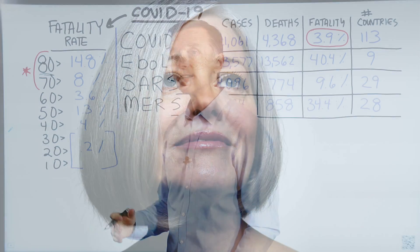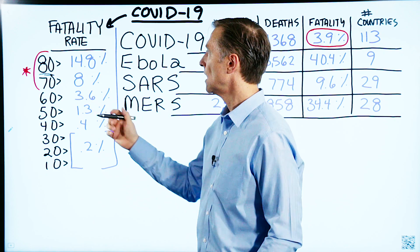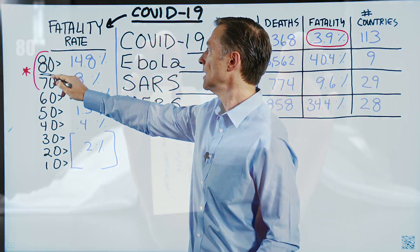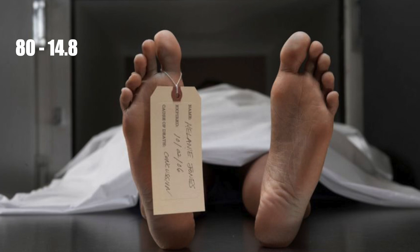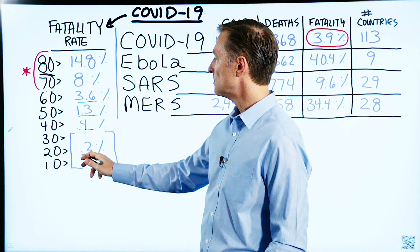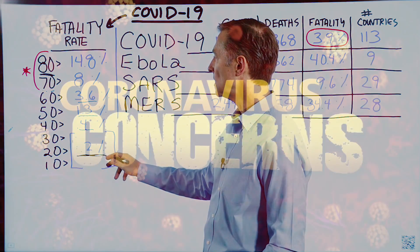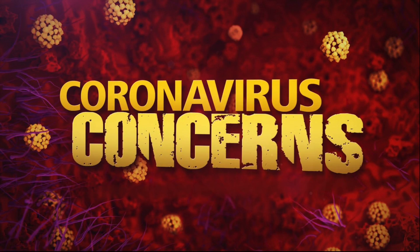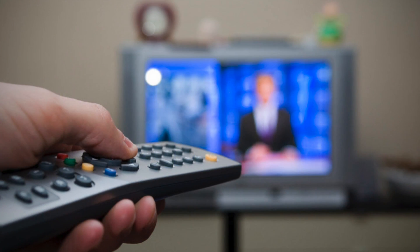Looking at the fatality rate of the coronavirus by age: in the 80s and older, there's a 14.8% death rate. In your 70s, it's 8%. In your 60s it comes way down to 3.6%. In your 50s it's only 1.3%. In your 40s, it's 0.4% — less than half a percent chance of dying once infected. In your 30s, 20s, or teens, it's 0.2%. This is extremely low, and really important to know because the news makes it sound like everyone's going to die — that's not true.